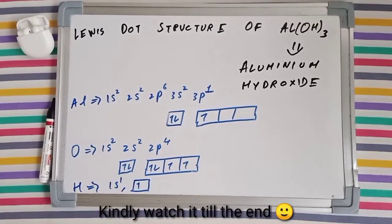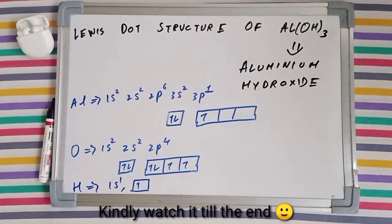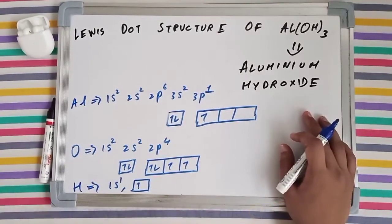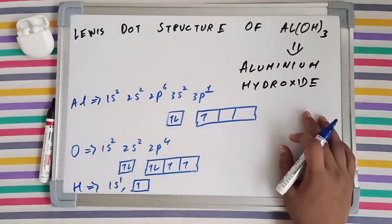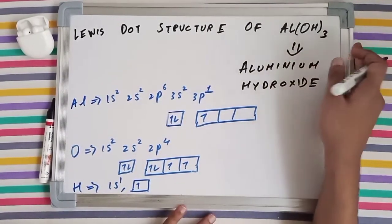Welcome everyone. We'll be drawing the Lewis dot structure of Al(OH)3, which is known as aluminum hydroxide. In order to draw the structure, we need to find out the valence electrons of the different atoms present in this molecule.